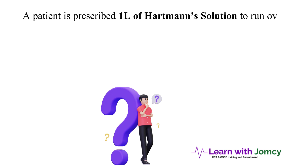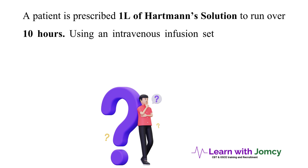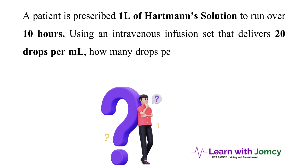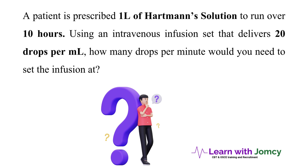Now let's go to the question. A patient is prescribed one liter of Hartmann's solution to run over 10 hours, using an intravenous infusion set that delivers 20 drops per ml. How many drops per minute would you need to set the infusion at?